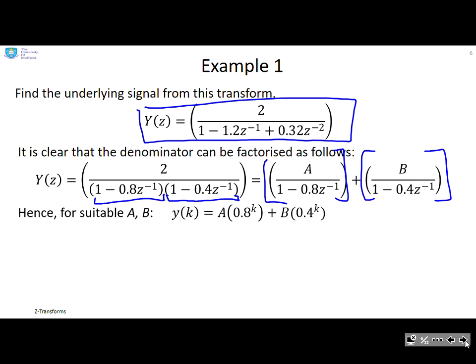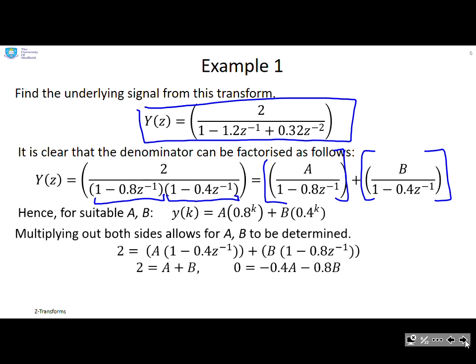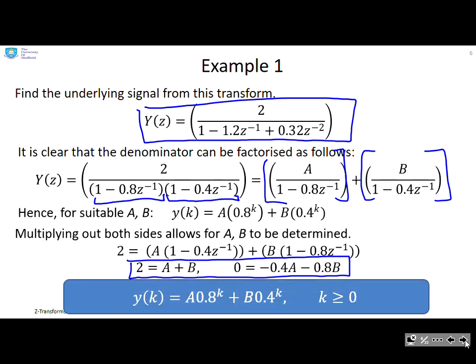You might want to know what A and B are. What you could do is multiply out both sides of the equations and then equate coefficients of Z to the 0 and Z to the minus 1. You will end up with two simultaneous equations from which you can solve for A and B and plug them in. Now you have your answer.